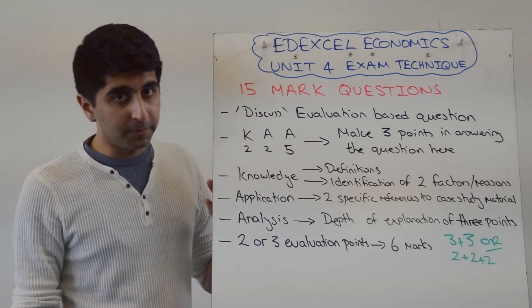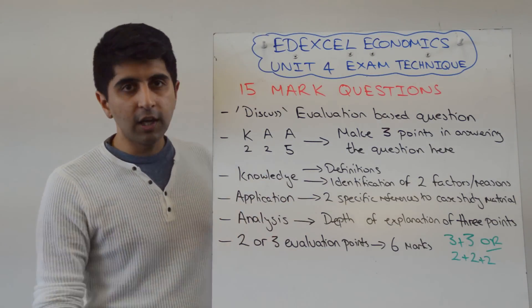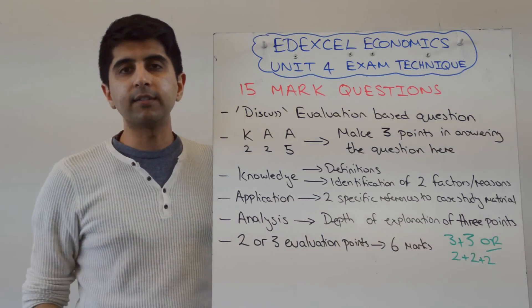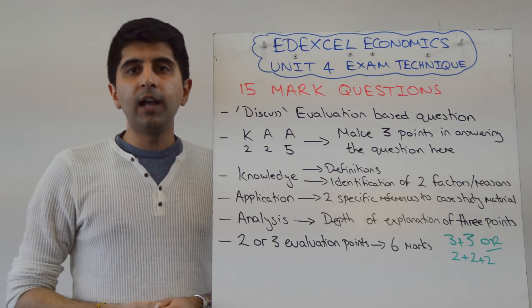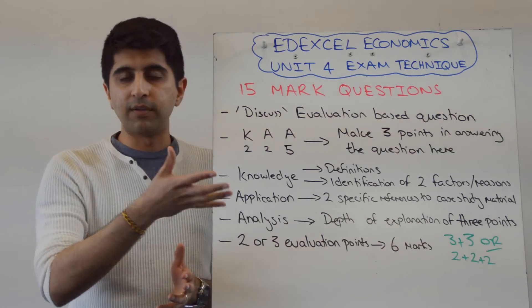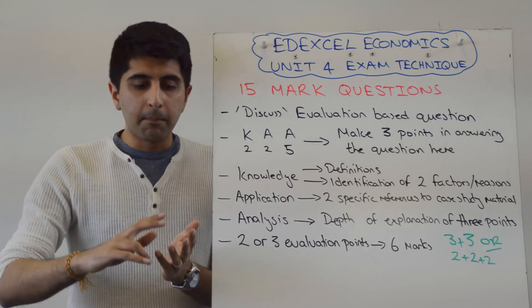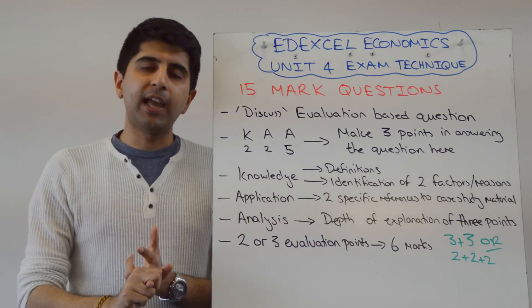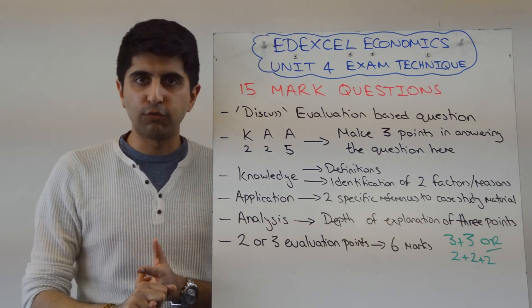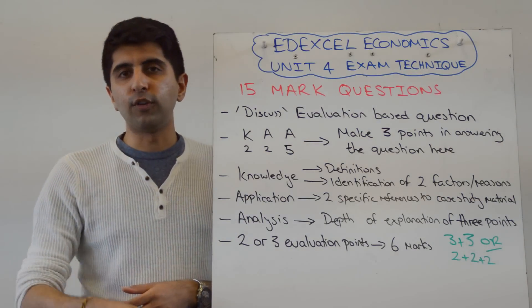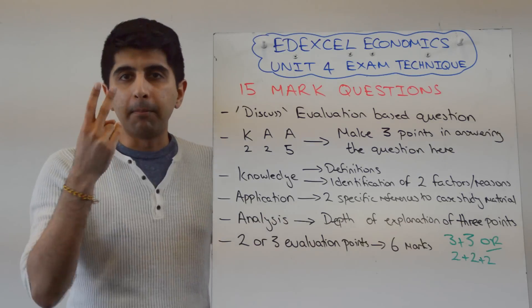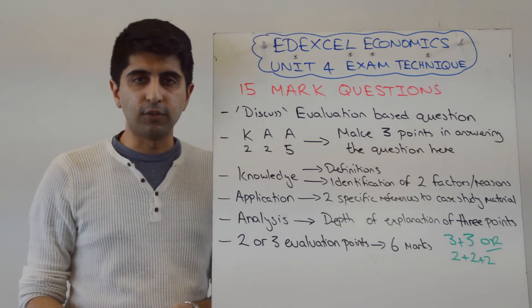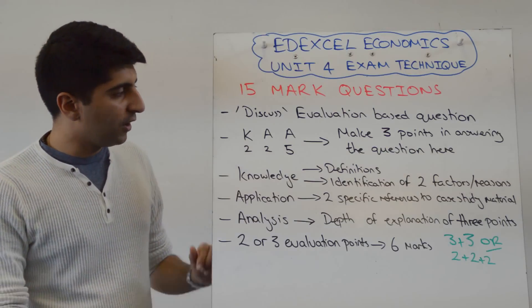So let's be more specific. How do you get the marks? Well, for knowledge, you can get a maximum of 2 marks. So in your 3 paragraphs, you're looking to define your key terms. Defining 2 key terms will get your 2 marks. But more likely, it's going to be for identification of factors or identification of reasons, capped up to 2. So if you do 3 reasons, you won't get 3 marks, you'll just get 2. But make it clear that you're identifying reasons. Do that twice and you've got your 2 marks for knowledge.